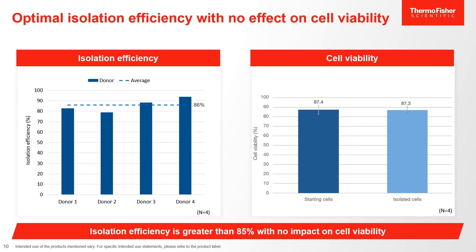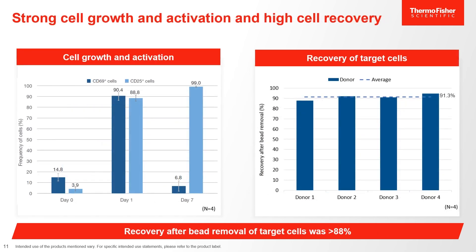An 86% isolation efficiency was observed, and on the left you can see the breakdown of recovery percentages across the donors. Looking at the right, you'll see the viability pre and post isolation. The gentle nature of the DynaSelect incubation step provides optimal isolation, while also having little to no impact on cellular viability. These cells were then cultured for seven days, allowing the cells to slough off any present DynaBeads, at which time these cultures were then de-beaded. Looking at activation and growth post-isolation, after the first 24 hours in culture, the majority of cells are expressing early activation markers such as CD69. In addition, this activation is further confirmed by expression of proliferation receptors, identified through marking by anti-CD25 fluorophores. By day seven, the sustained expression levels only continued to increase, demonstrating mature, proliferating target cells. On this same day, cultures were de-beaded, and the recovery of these cells surpassed 88%.